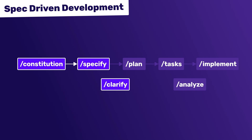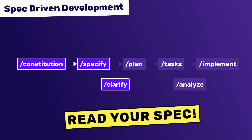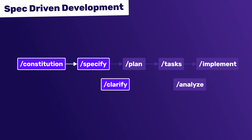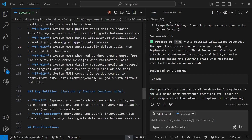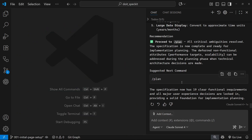At this point, before you start the planning stage, it's a good moment to actually read over your spec and make sure it's correct. If you want to edit the spec, now is the time to do it, because all the planning, research, and task generation is going to be based on this spec. It's better to make sure it's right now than find out after all that extra work has been done. You can edit it manually or ask the coding agent to do it.